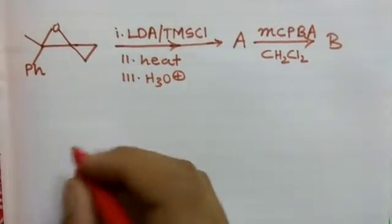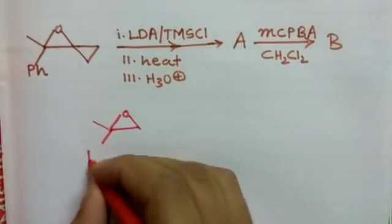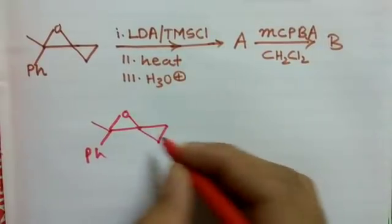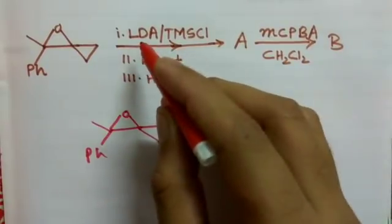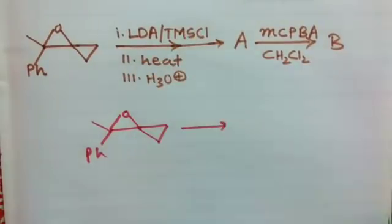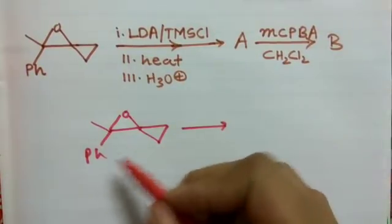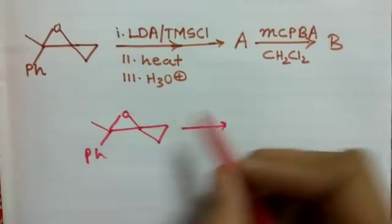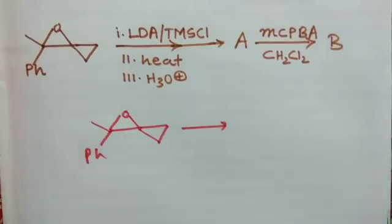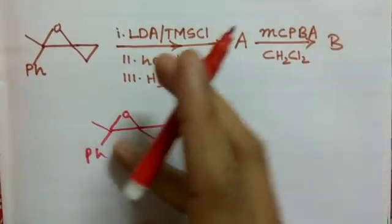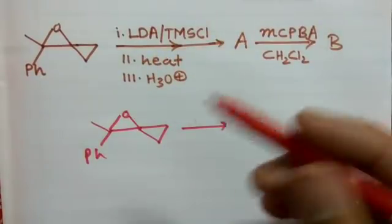First, this is our compound given. Here we have phenyl and this is a cyclopropyl epoxide. The reagents given in the first step are LDA and trimethylsilyl chloride. LDA is a very strong base, but you cannot see any acidic proton here. Although LDA can abstract protons from almost anywhere, when you have base you will always try to find some acidic hydrogen. But here you can see there is no such acidic proton, so forget about LDA.